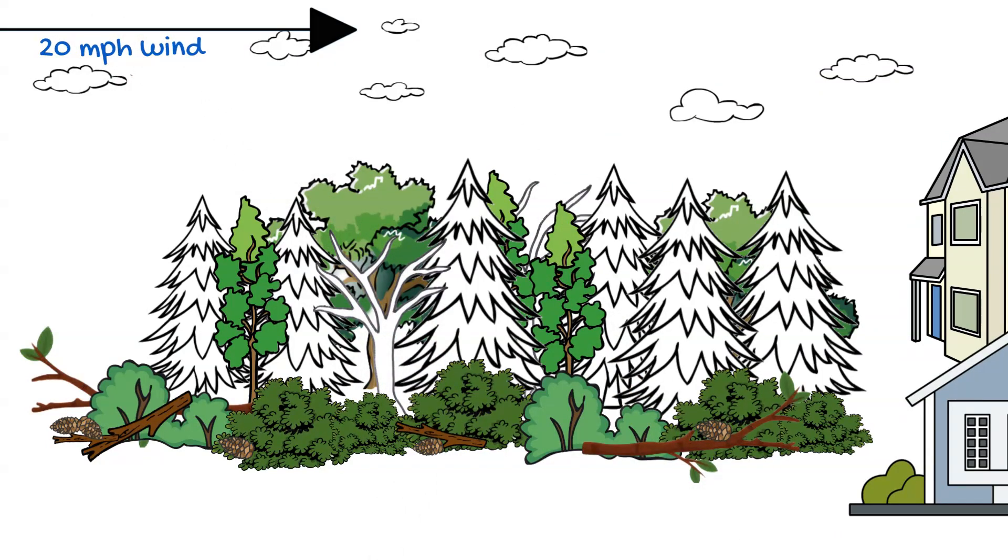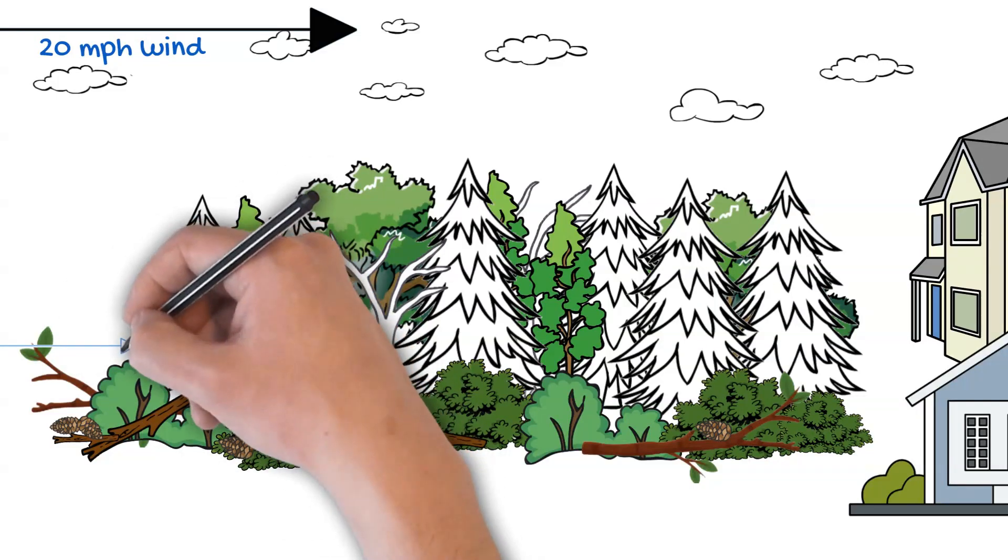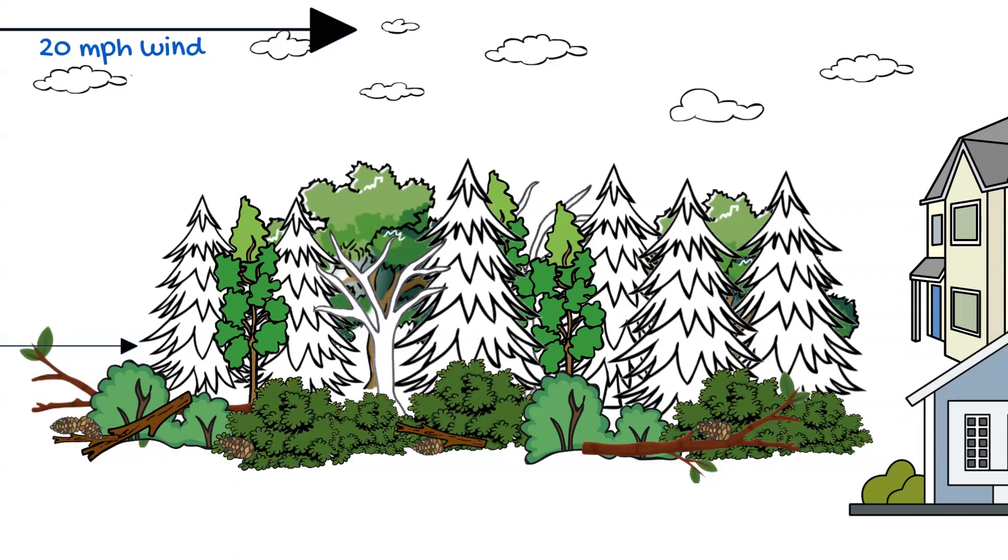The way wind works though, the closer that wind is down to the vegetation or the ground, the friction of the vegetation, the friction of the earth, the homes, the terrain slows that wind down. So we really as wildland firefighters think about what we call eye level wind. That is the wind that really is driving ground fire.